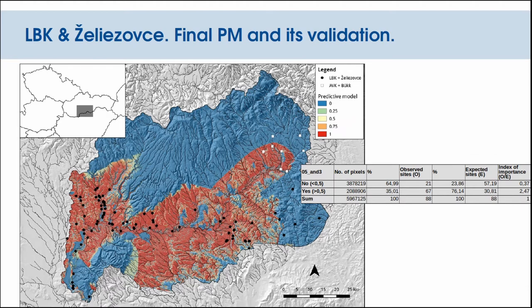The final predictive model was created combining both the original set of sites and the test sites. Internal testing shows this model works even better — it explains 76% of the sites, and the zone with the highest potential covers approximately 35% of the total area.